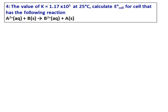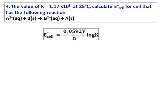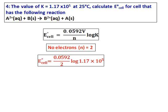The value of K is 1.17 times 10⁵. And you have to calculate the E cell for the cell that has the following reaction. So we need to use the equation that connects E cell and the equilibrium constant. And we need to know the number of electrons. So from the equation, the charge of 2+ and 2+, we know that the electron transfer should have been 2.